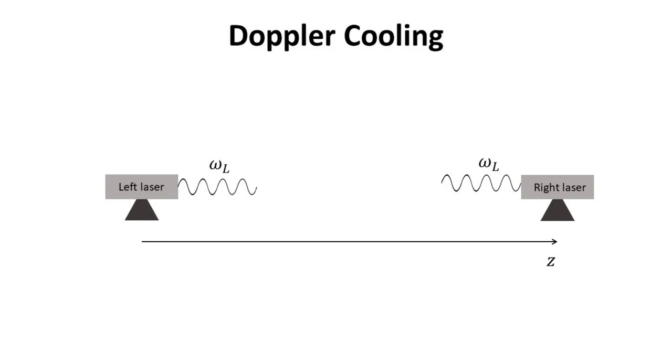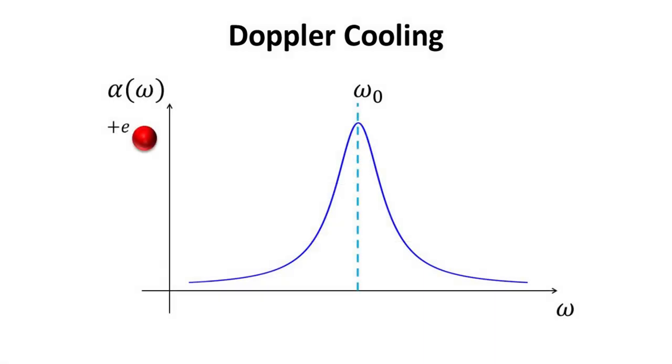Imagine there are two lasers operating with the same frequency omega L. One is on the left side shooting photons in the positive Z direction and the other is on the right side, shooting photons in the negative Z direction. An ion with charge plus E is put in motion with velocity V heading towards the positive Z direction. The ion has a resonant frequency of omega 0, with a Lorentzian light absorption peak as shown.